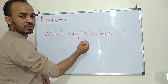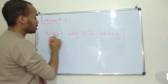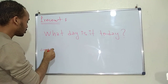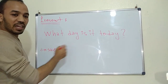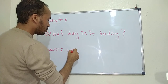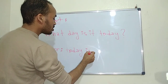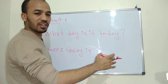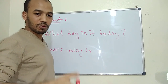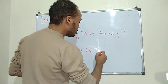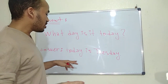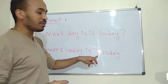Pay attention to this verb — it is the verb 'to be' conjugated in the present: 'What day is it today?' So the answer starts with 'today' as a subject: 'Today is...' and you write the name of the day. Suppose that today is Tuesday — so we say 'Today is Tuesday.'